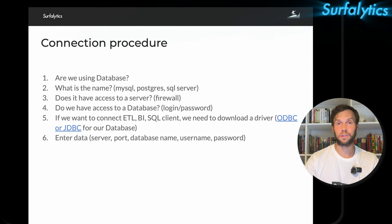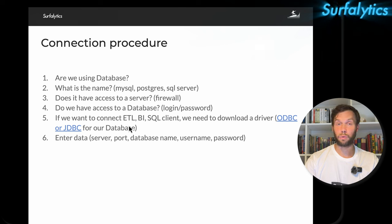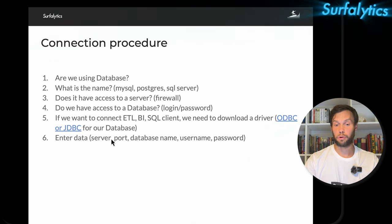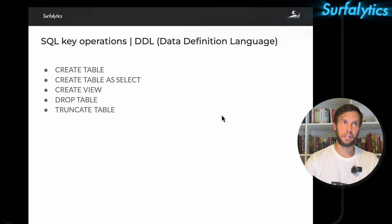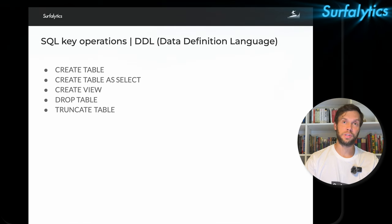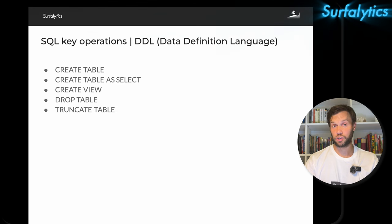Depending on what tool you use — ETL tool, BI tool, or SQL client — you need to download the proper driver. Then you can enter all credentials: server, port, database name, user and password, and click 'Test Connection' — it should succeed. Another popular connection method, especially between a BI application and a data warehouse, is using a key pair: a private key and public key that you generate and assign to your connection.